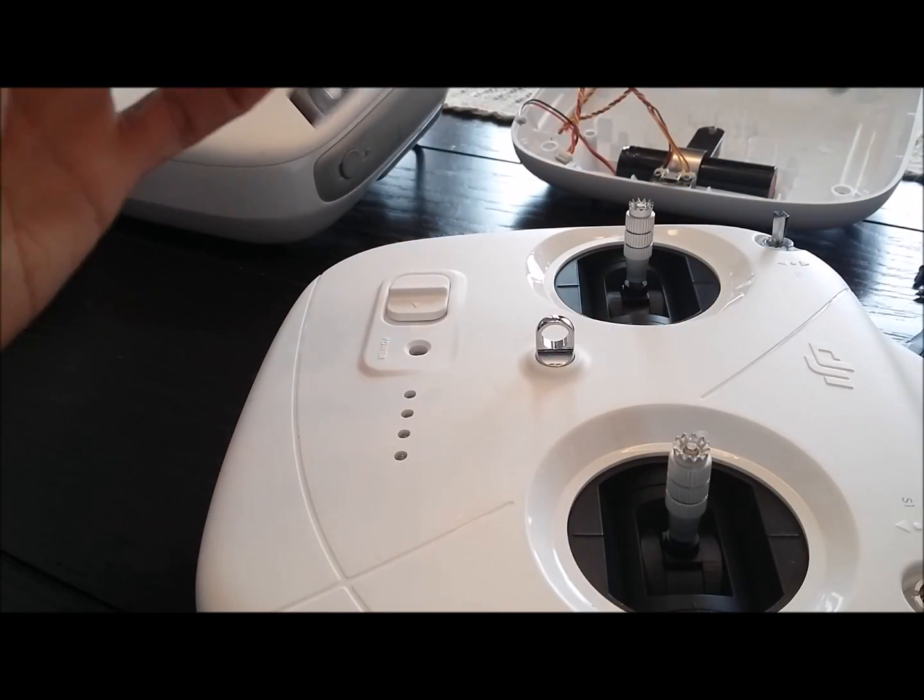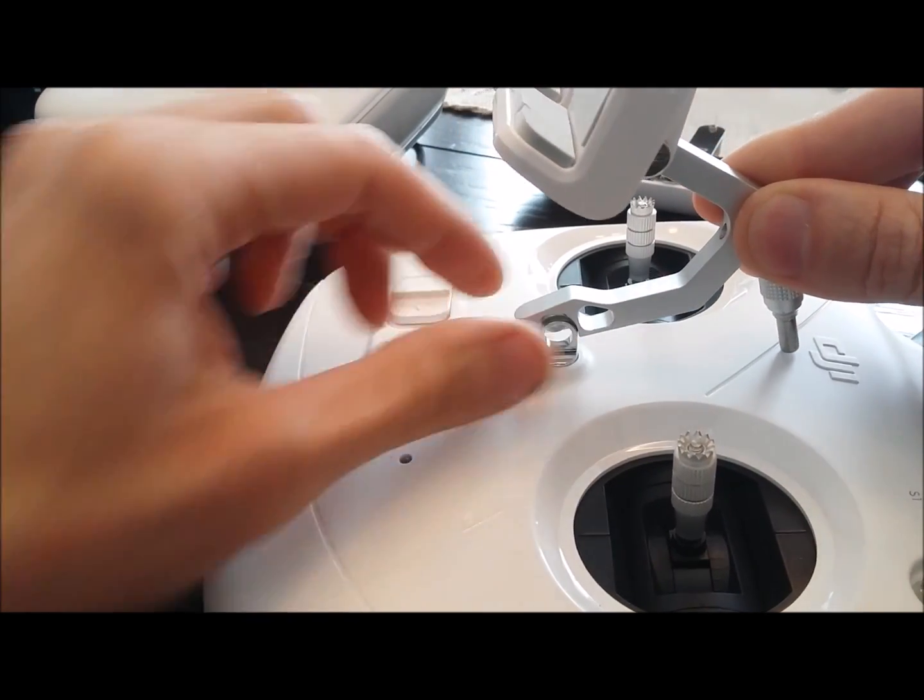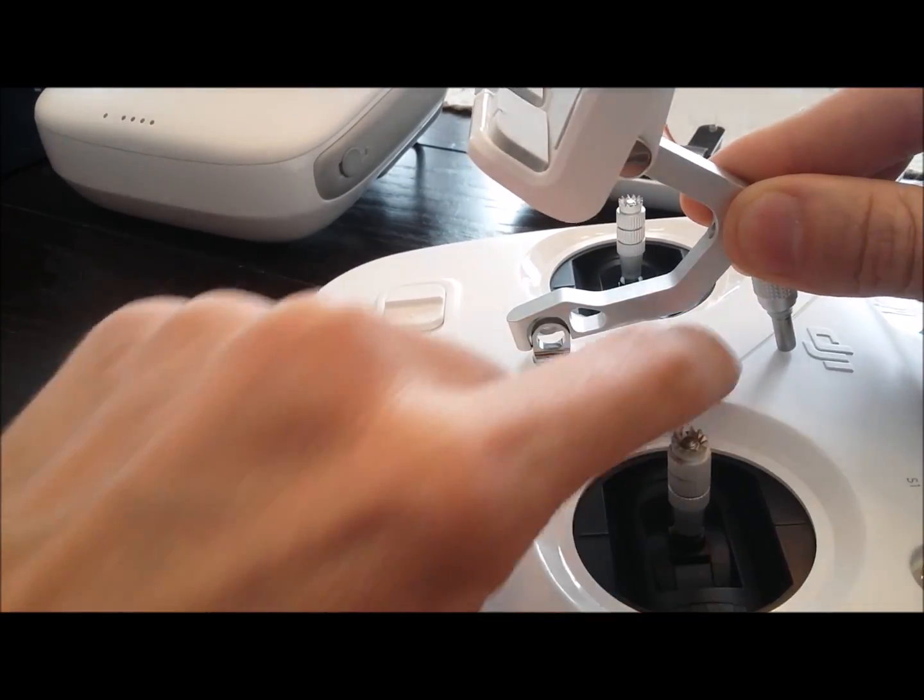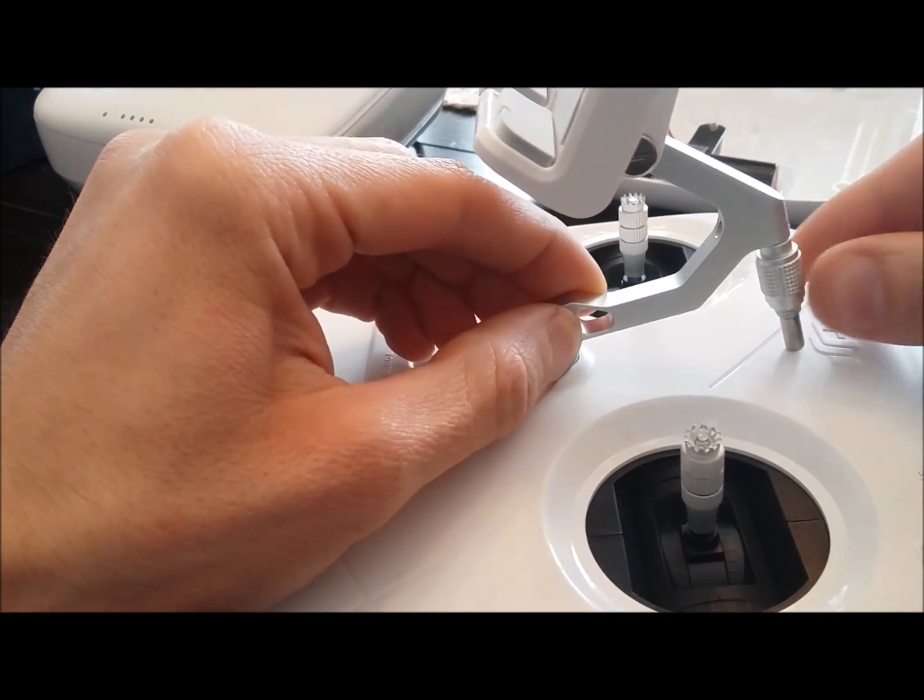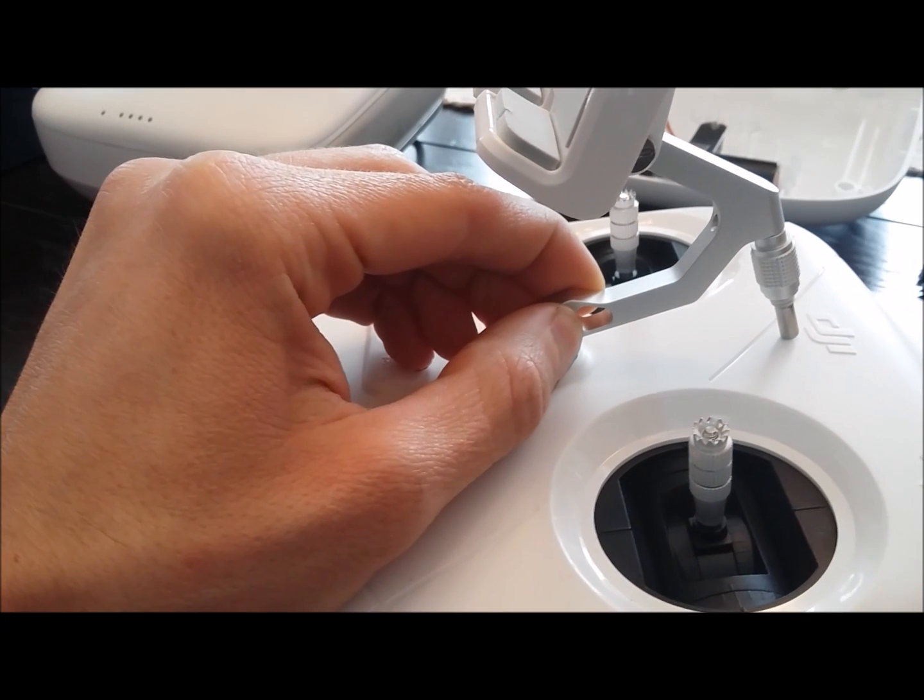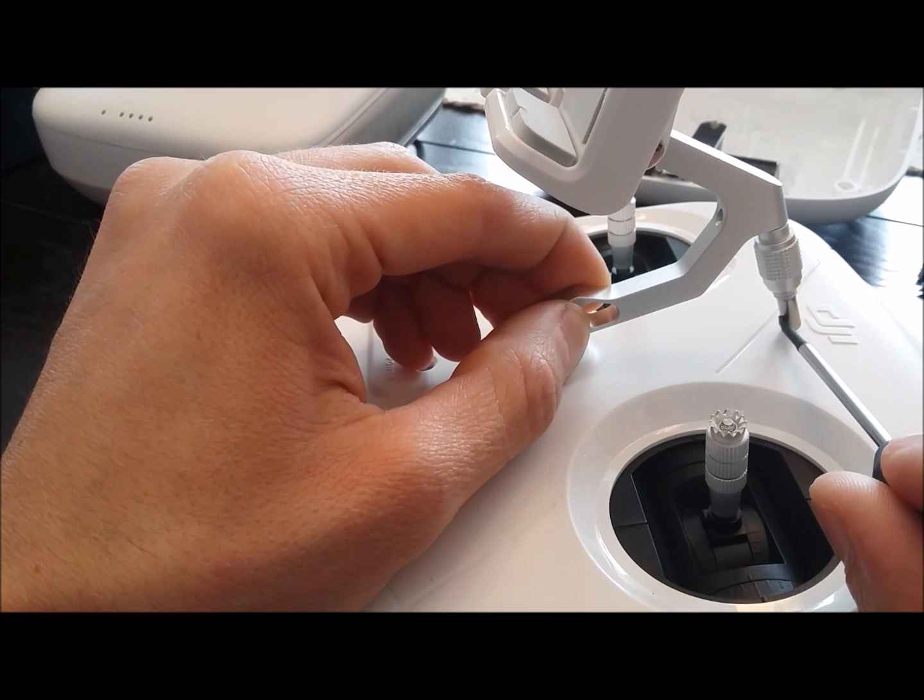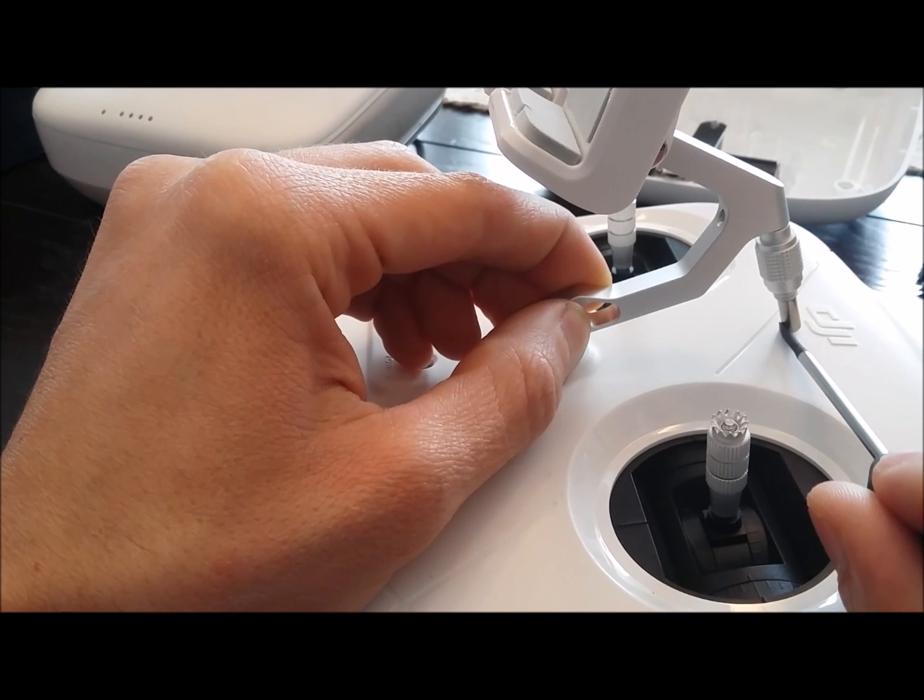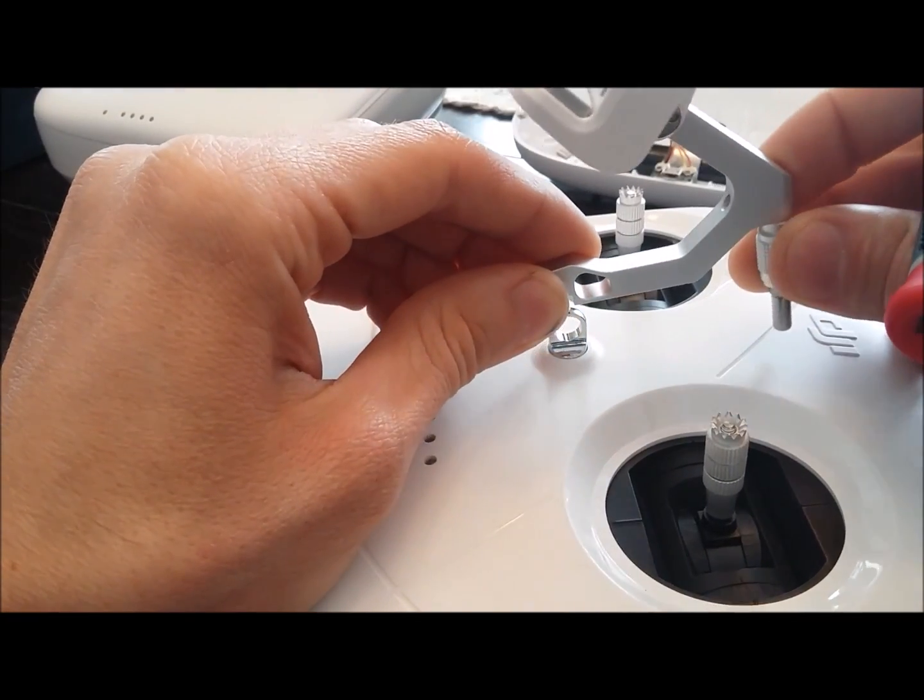Alright so to go ahead and drill this hole what we're going to have to do is just kind of line this up. You're not going to be able to get the screw in yet because this is sticking up too far so we're just going to get it lined up pretty close. Make sure that it's centered and we're going to put a mark not at the center. We're going to put a mark right where the bottom here meets.